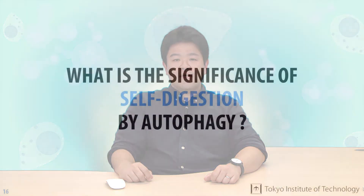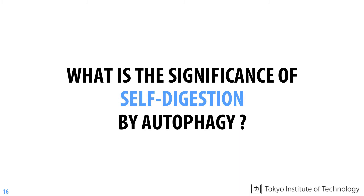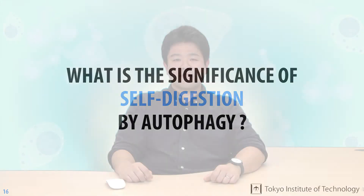We have seen that autophagy is a mechanism for self-digestion in our cells. Next, let's discuss the usefulness of self-digestion by autophagy to the cell. We currently know that autophagy has many important roles in life, but here we'll focus on three fundamental roles of autophagy.